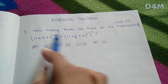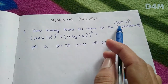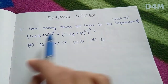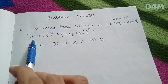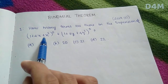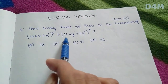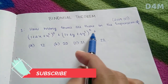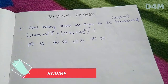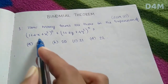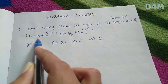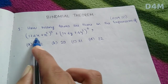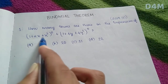This is our first question: How many terms are there in the expansion of (1 + 2x + x²)⁵ + (1 + 4y + 4y²)⁵? We use the formula a² + 2ab + b² = (a+b)².